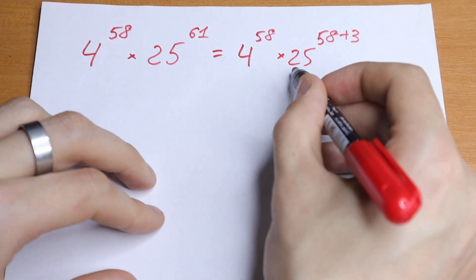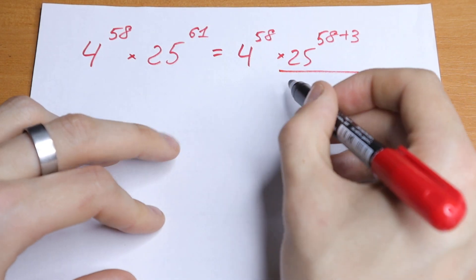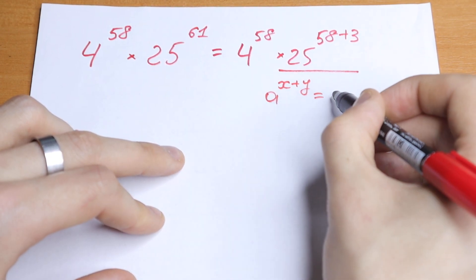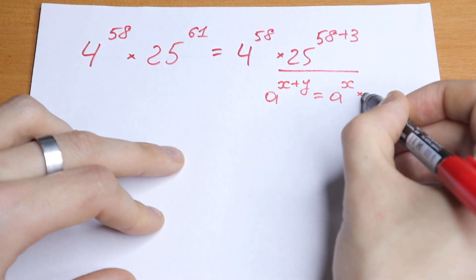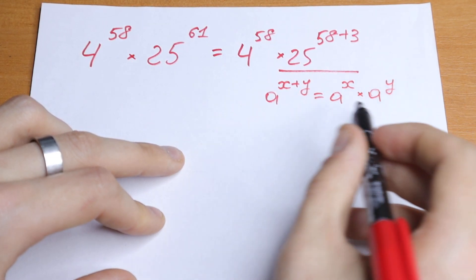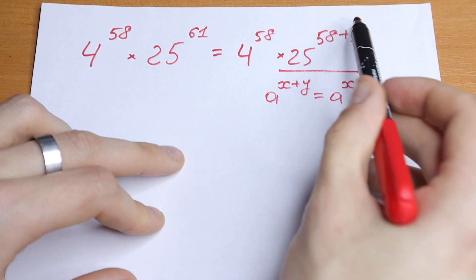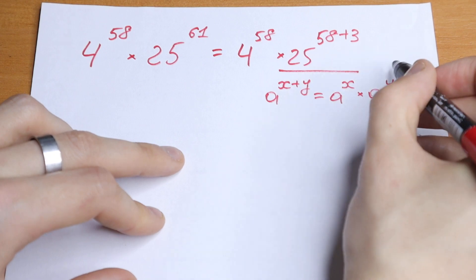We need to know the rule. I'll write the rule: if we have a to the power x plus y, we can write it as a to the power x times a to the power y. So let's use this rule. We have a equals 25, x equals 58, and y equals 3.